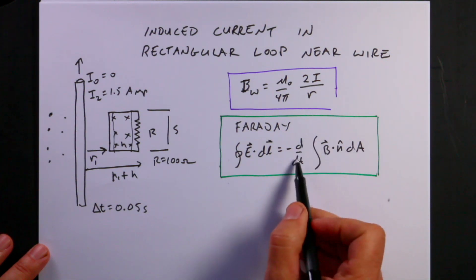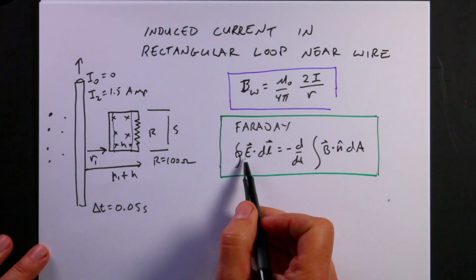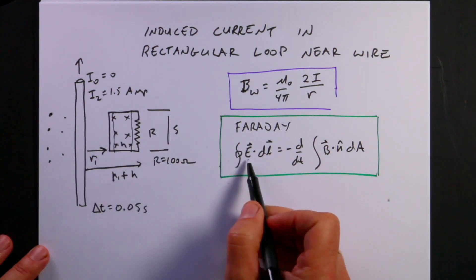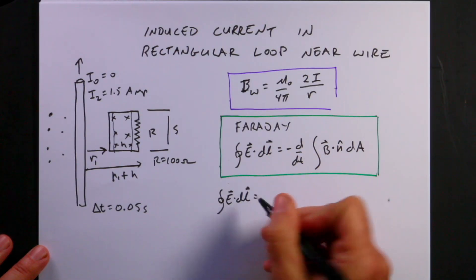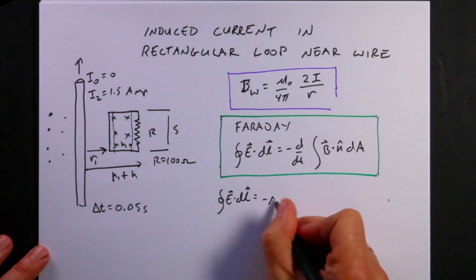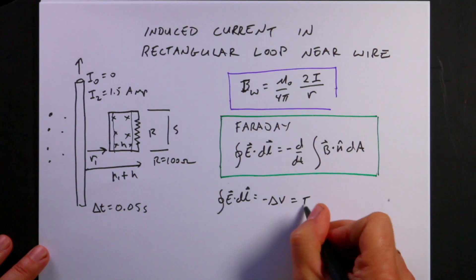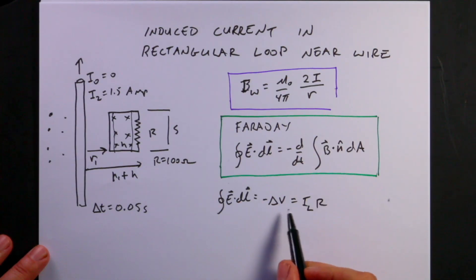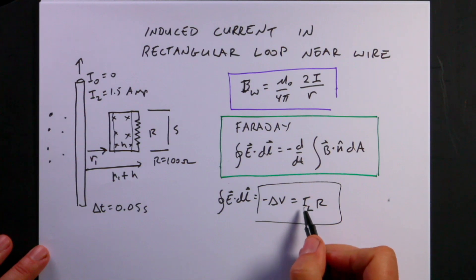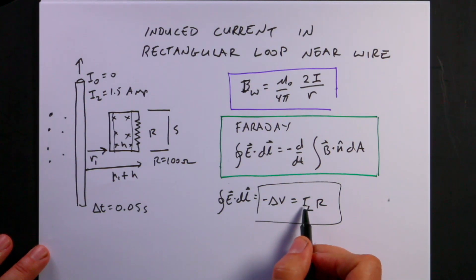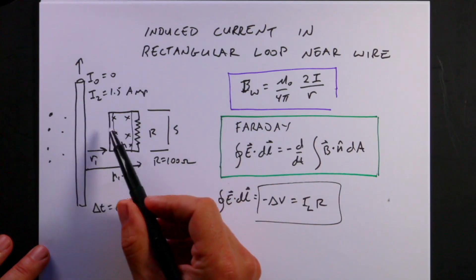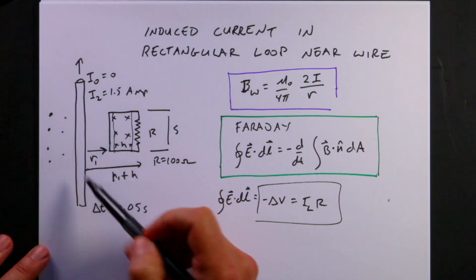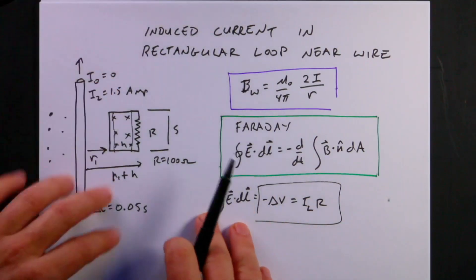Once I calculate the flux, I can take its time derivative and set that equal to the EMF. The line integral E·dl around the loop equals negative delta V, which I can set equal to i_loop times R by Ohm's law and solve for the induced current. The first step is to calculate the flux through the loop due to the current i(t).